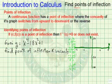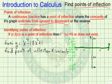Let's look at points of inflection. What is a point of inflection? A continuous function has a point of inflection where the concavity of its graph switches from upward to downward or from downward to upward.